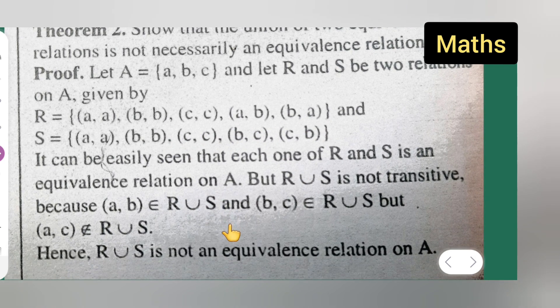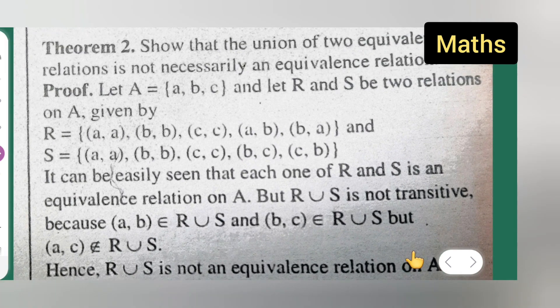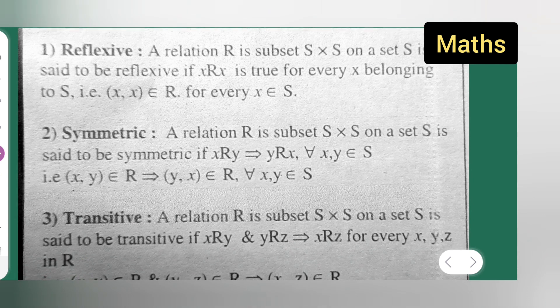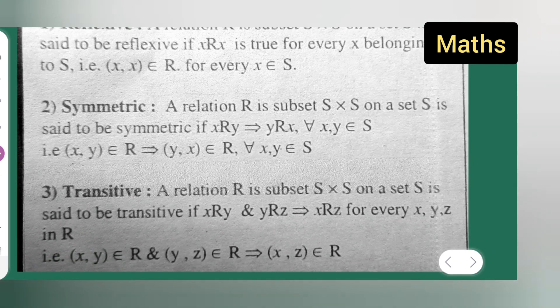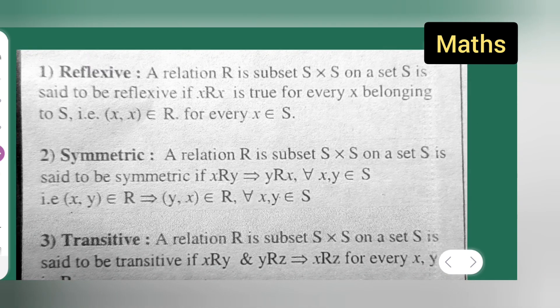Hence R∪S is not an equivalence relation on A. Since you will know the definition of what is reflexive, transitive, and symmetric — over here it is given — it is not transitive.